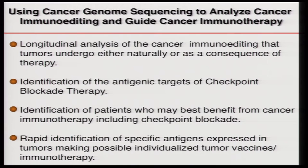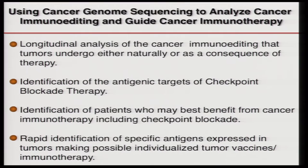We're really excited about this for four reasons. First, this approach is going to help us analyze longitudinally the cancer immunoediting that tumors undergo either naturally or as a consequence of immunotherapy. Second, it can identify the antigenic targets of checkpoint blockade therapy and maybe even distinguish between patients who should and shouldn't be treated with this therapy. Third, it can identify patients who may best benefit from other forms of cancer immunotherapy. And obviously, it may bring us to what I think we all would love to see: the rapid identification of specific antigens expressed in human tumors that make possible individualized cancer vaccines or other forms of immunotherapy.